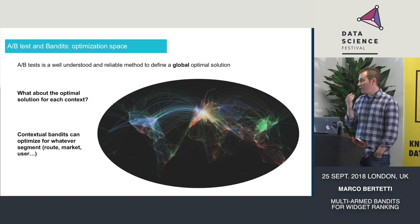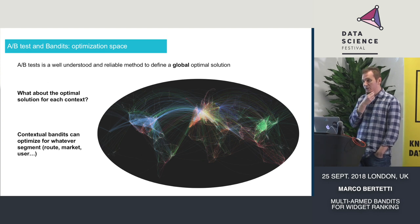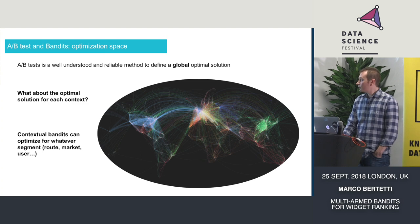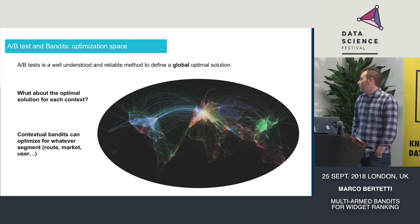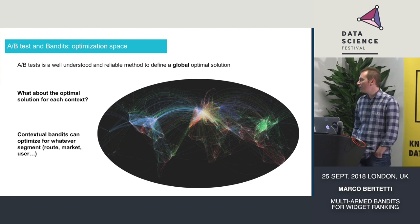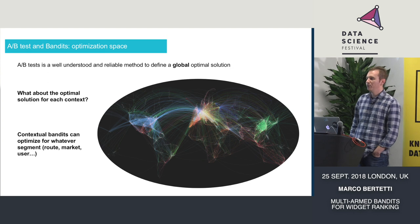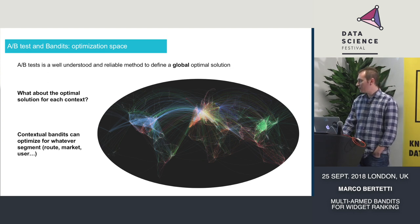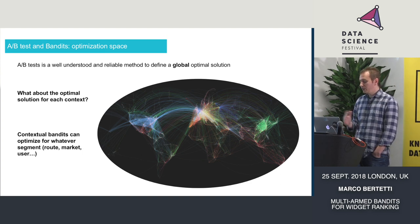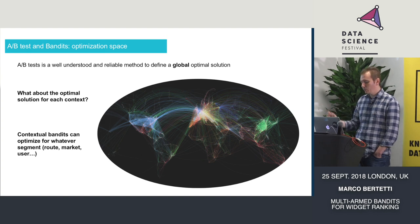The second consideration: A-B testing is well understood and a great tool to define a global optimal solution, but what is the optimal solution for each context? We've introduced contextual bandits. In our case, we want to optimize for each route we serve on the planet, which is about 100,000. Counting 100,000 routes times all possible permutations of all possible widget options becomes quite scary. With contextual bandits, you just feed it the four elements we saw previously, leave it running, and it works out the rest.